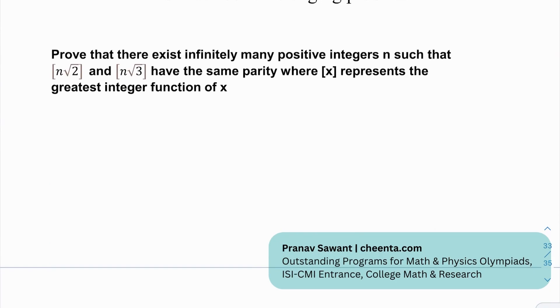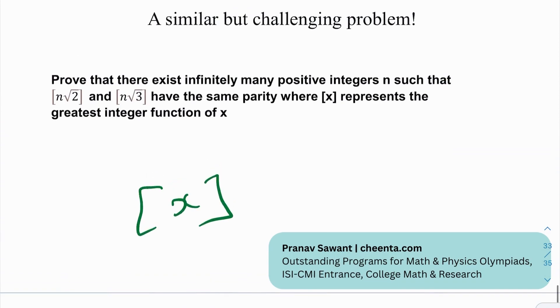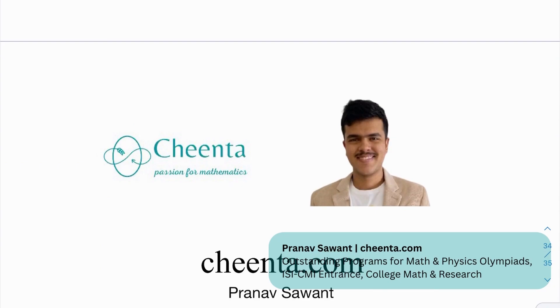So after that, we have a similar but challenging problem. And I want you to prove that there exists infinitely many positive integers such that the greatest integer function of N root 2 and N root 3 have the same parity. So they are both even, they are both odd. Either of these two can work. And where obviously this represents the greatest integer function of x, also called as the floor function. So I hope you know what that is. And yeah, if you make any progress on it or if you're able to solve that, please let me know in the comment section below. And until then, I'll see you in the next video. Thank you very much and bye-bye.